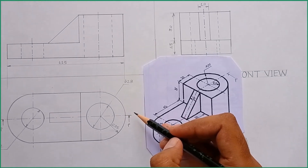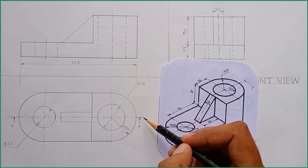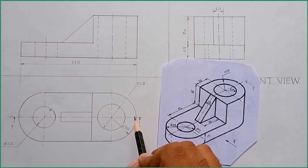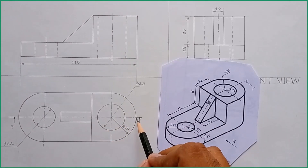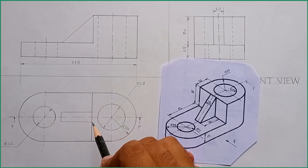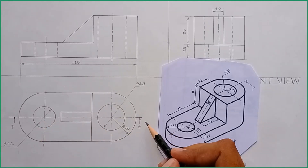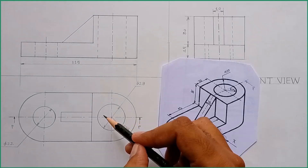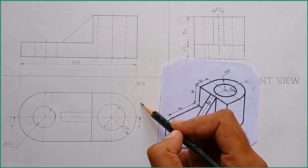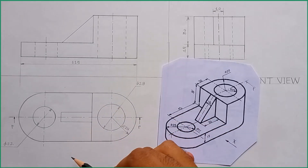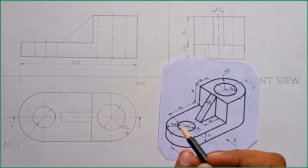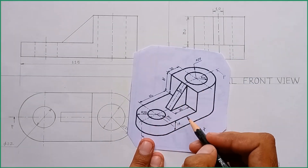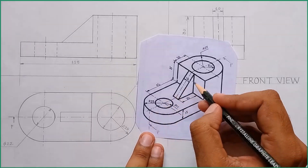So if we cut this object along this axis, what would be the view after removing this part? This direction indicates that this part will remain as it is, and this part will be removed. Let's start drawing the sectional front view — we are cutting this object from this direction.